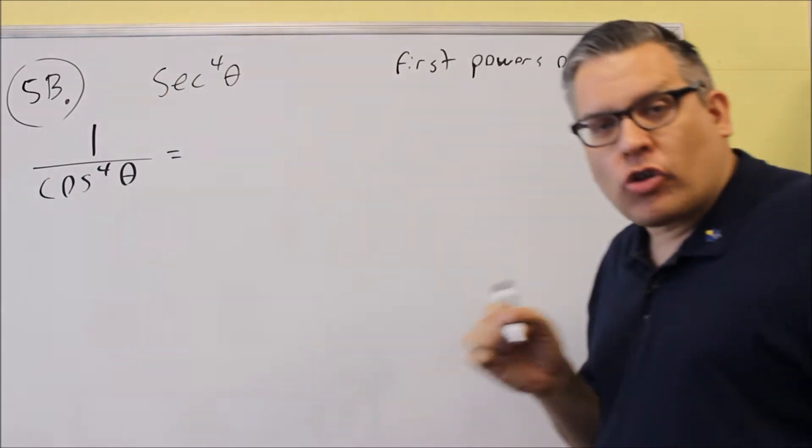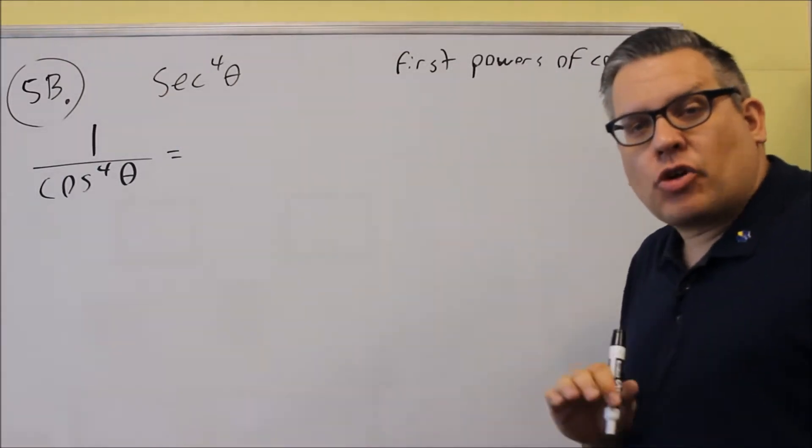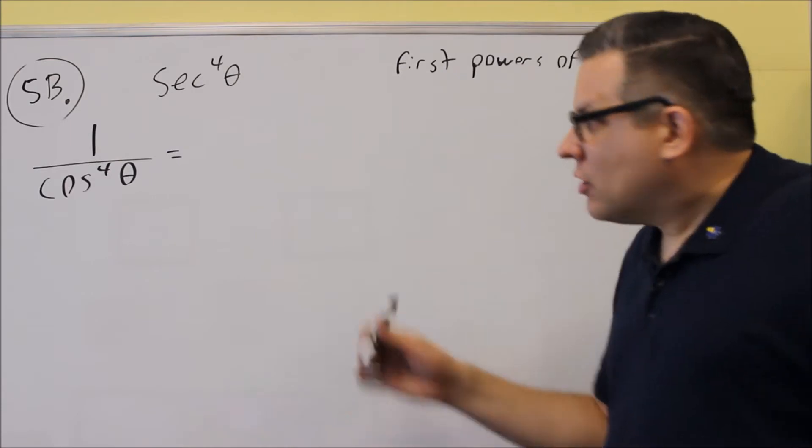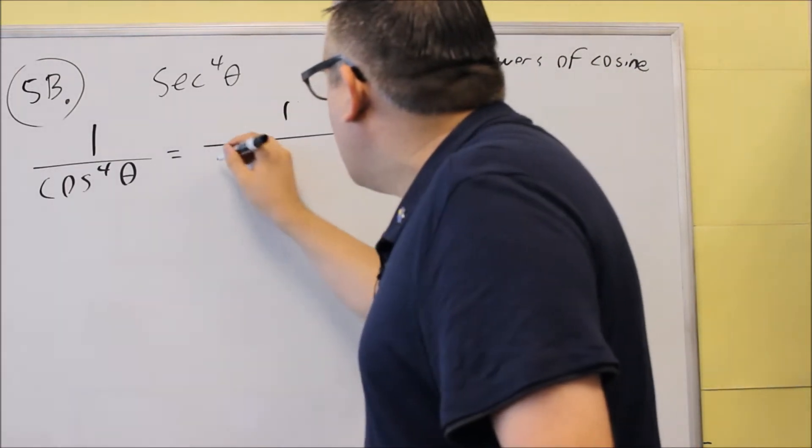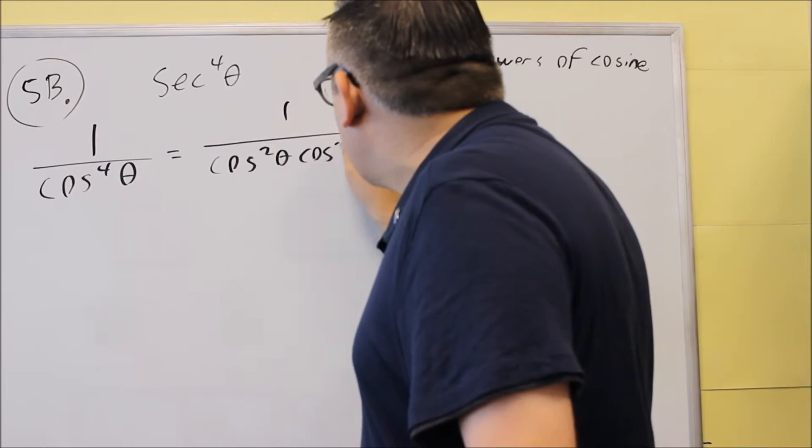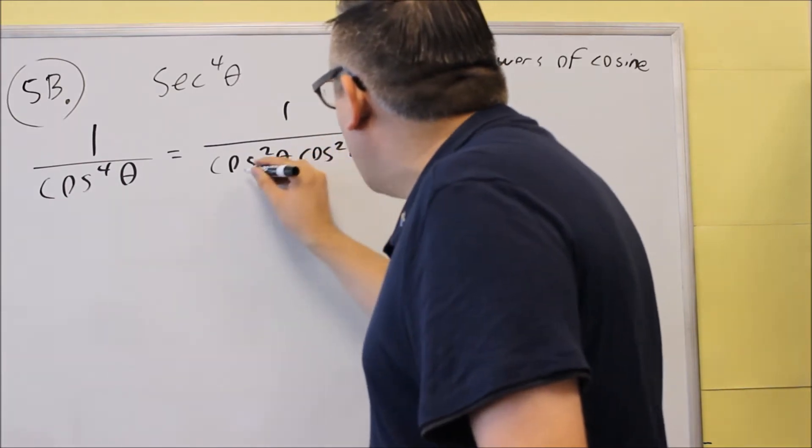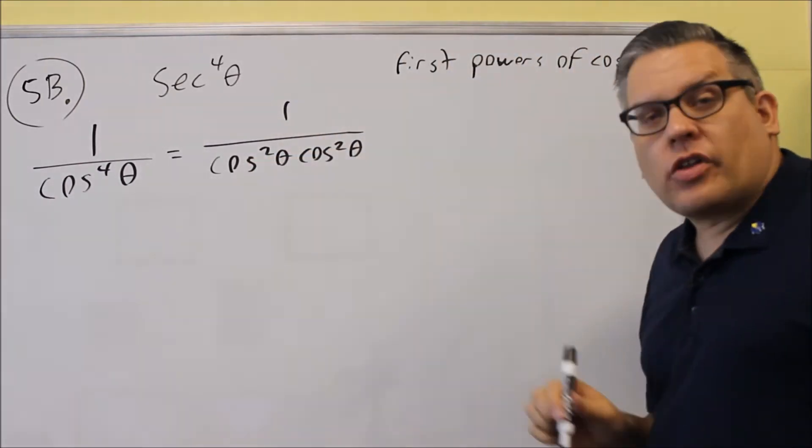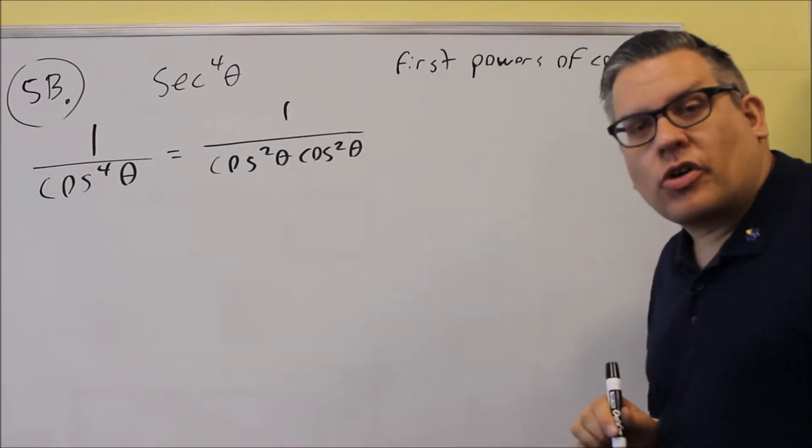Now, we don't have a cosine to the fourth power. We have everything in terms of cosine squared. So the next thing we want to do is rewrite this as cosine squared and cosine squared. So we're going to just write it like that, both of these, cosine squared and cosine squared.